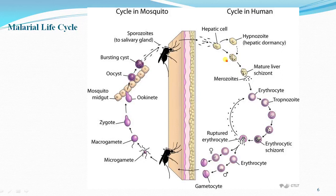Some of the merozoites get donated to male and female gametocytes. These gametocytes are taken up again by the mosquito when it bites an infected person.